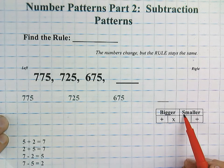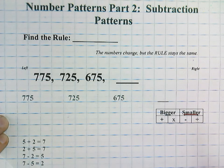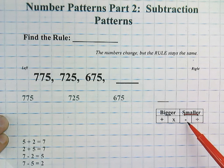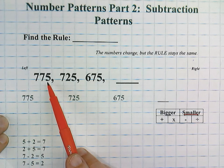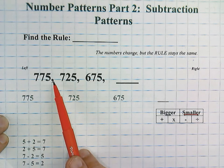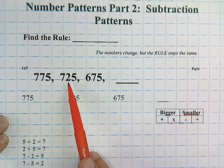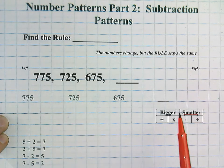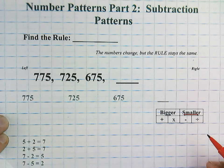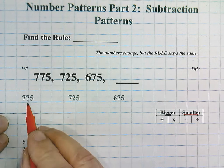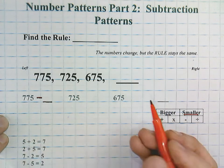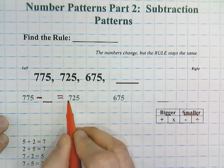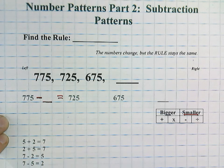The number's getting smaller, and it's either going to be a subtraction or division rule. When I look at 775, I know that we cannot divide it by any whole number and get 725, so it's going to be more than likely a subtraction rule. So, 775 minus blank, because we don't know yet what that is, but we do know that it will equal 725.